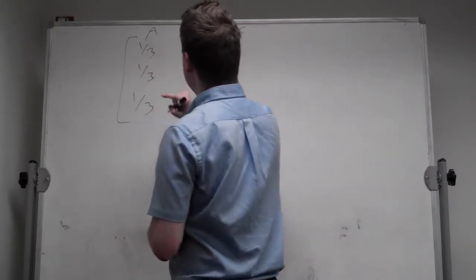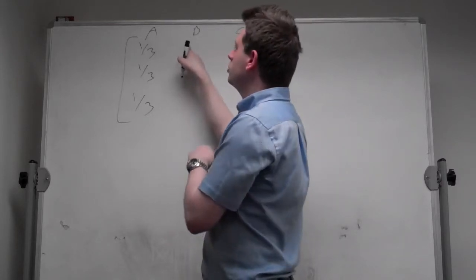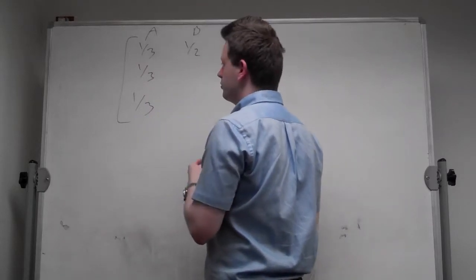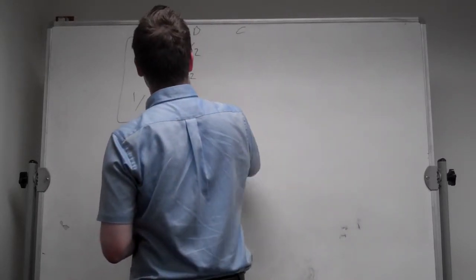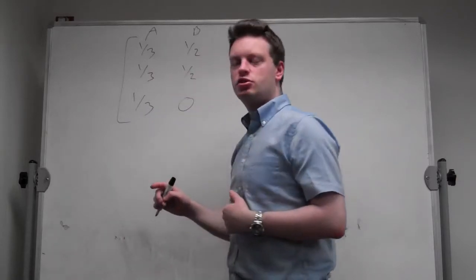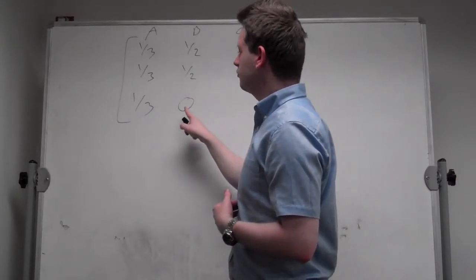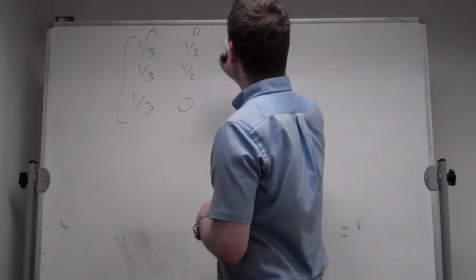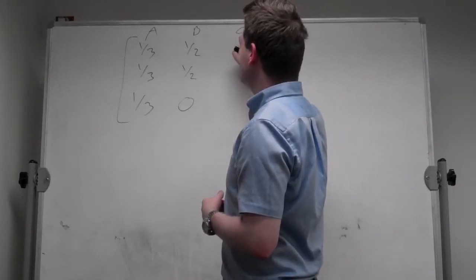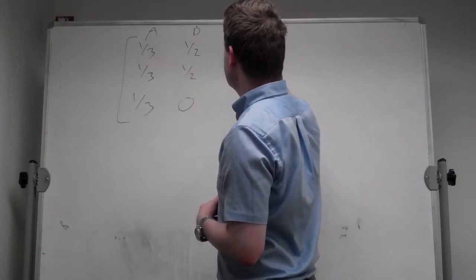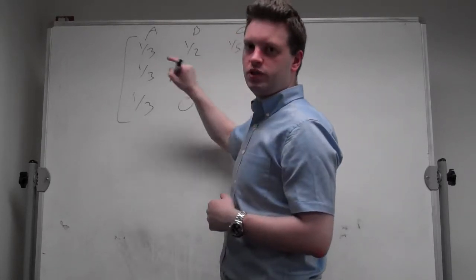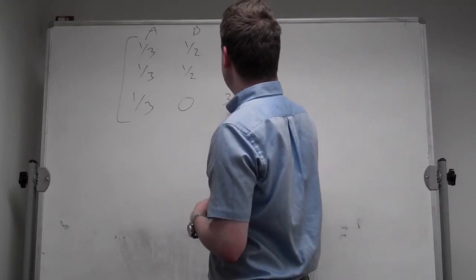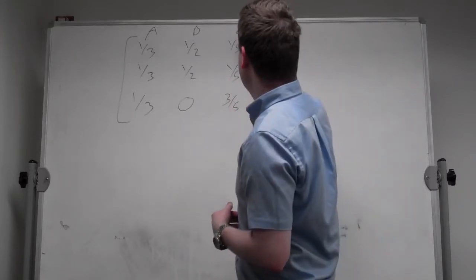The probability if you're today in state B to go into state A tomorrow is 1/2. And the probability of remaining in state B is 1/2 too, which leaves a zero probability going from state B to state C. From state C, the probability of going to state A is 1/5, the probability of going to state B is 1/5, and the probability of remaining in state C is 3/5.